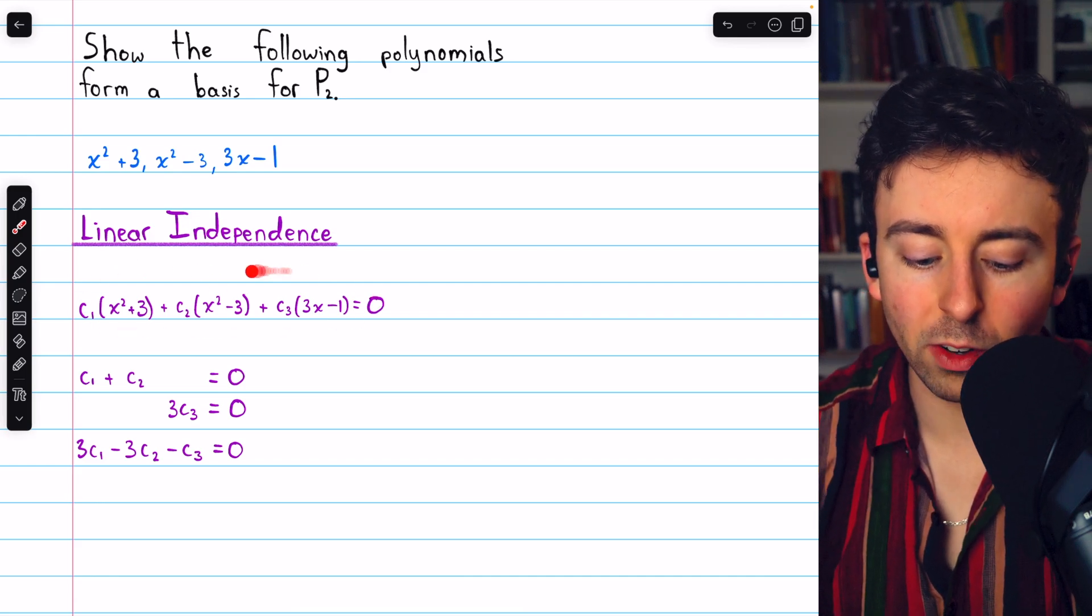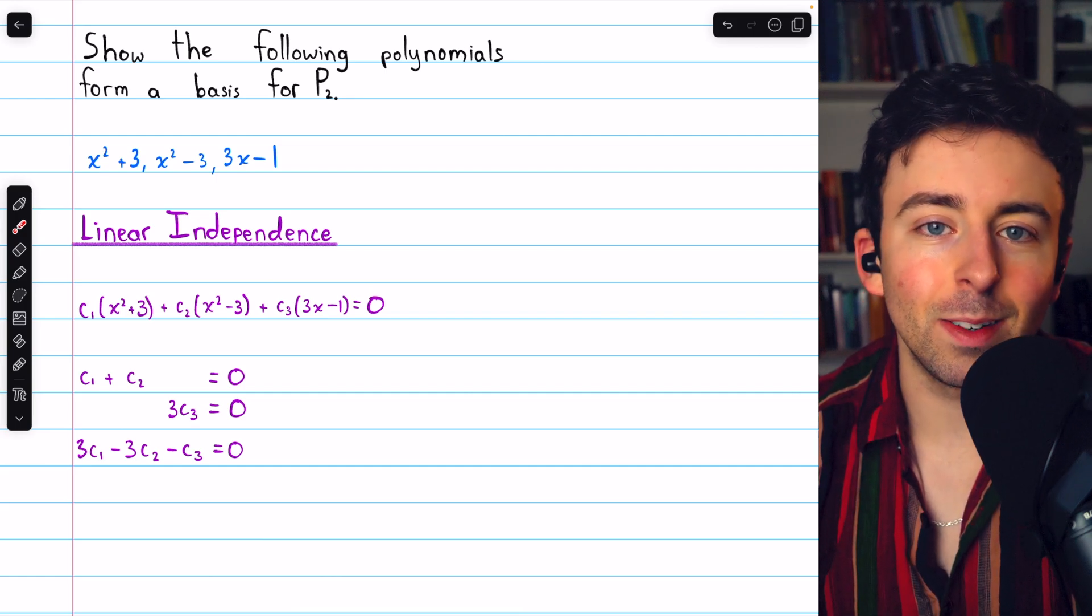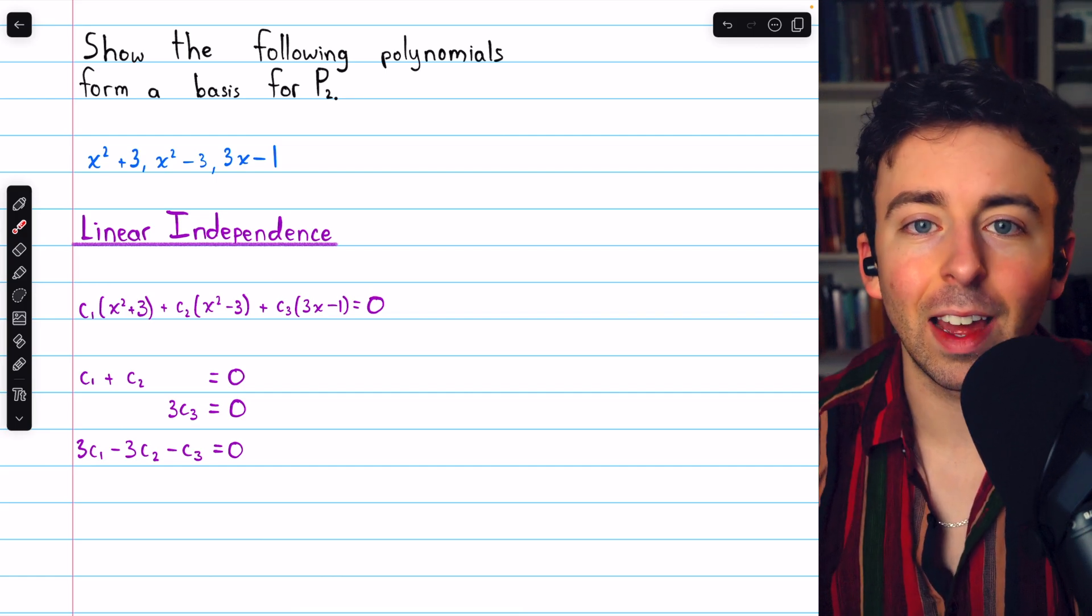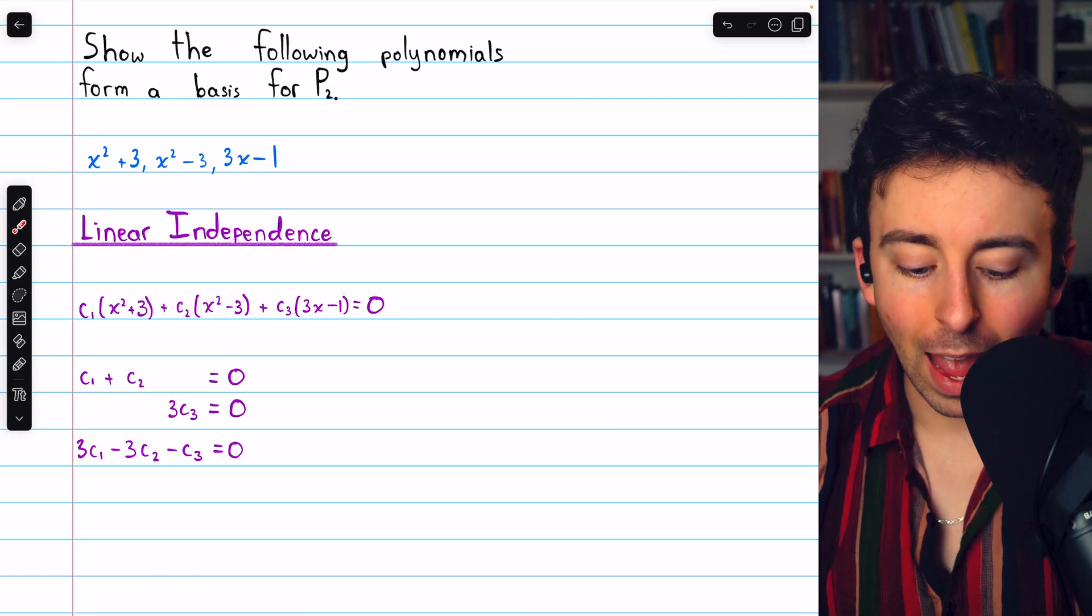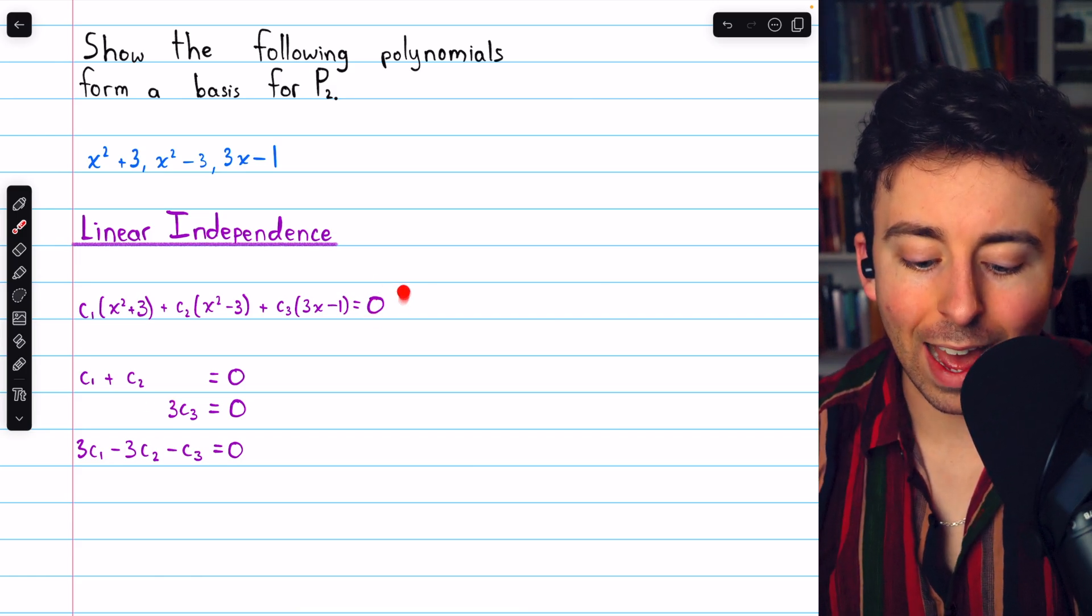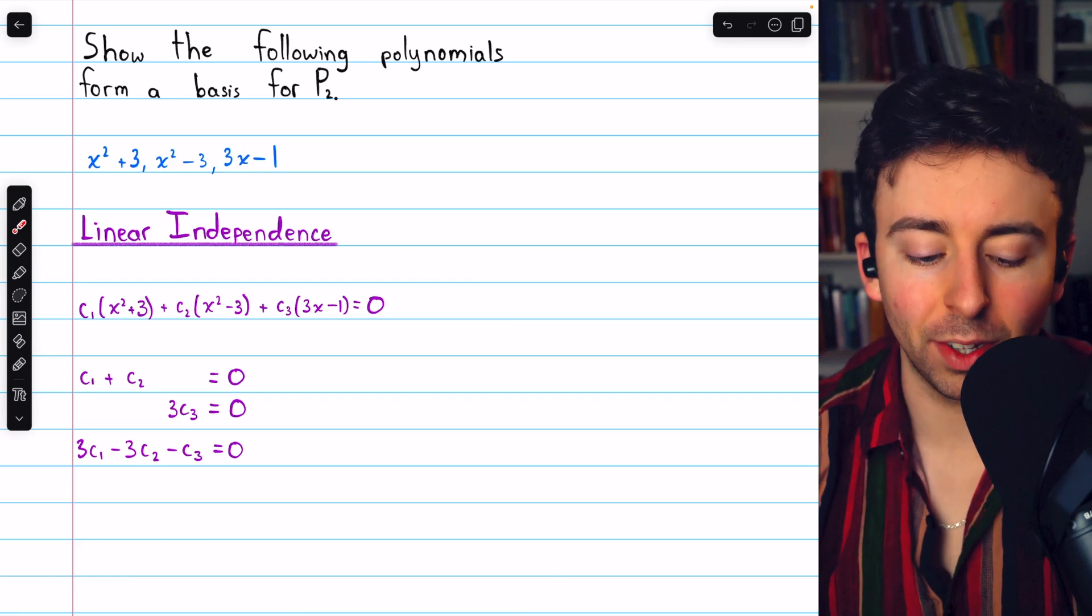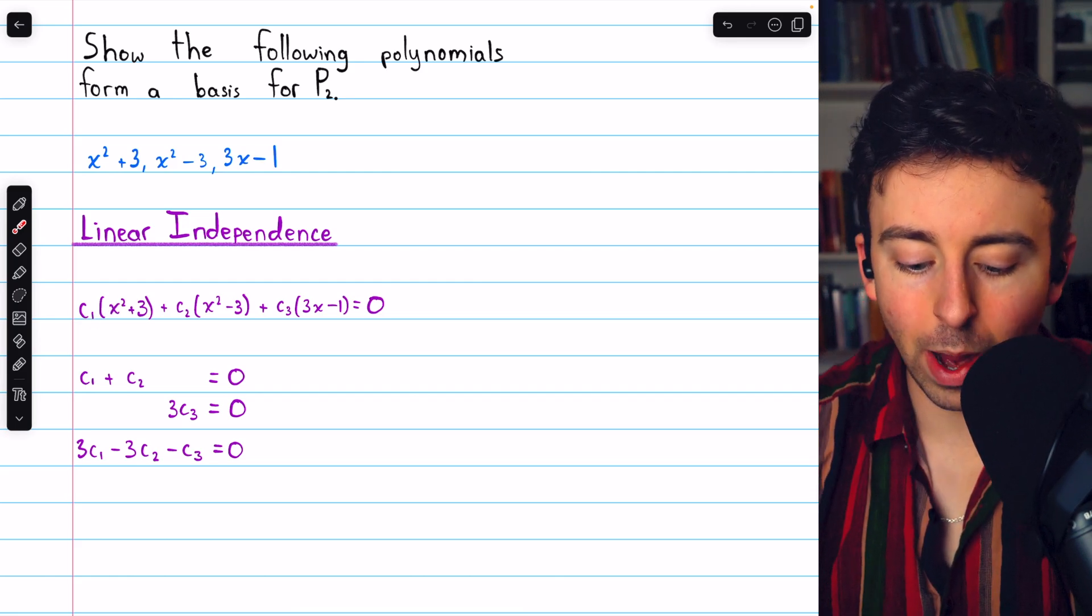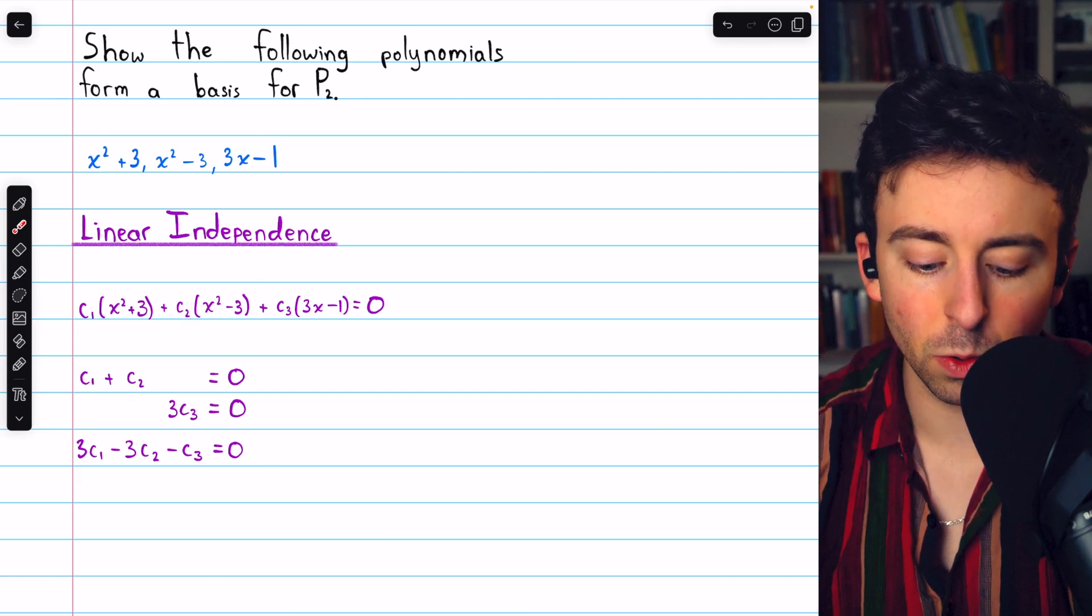the only solution to this equation should be the trivial solution. By equating the degree coefficients on the left and right, we get three equations. For example, how much x squared do we have on the right? Well, we have no x squared. How many x squareds do we have on the left? We have c1x squared plus c2x squared. Hence, c1 plus c2 must equal 0.